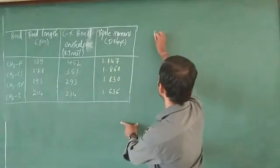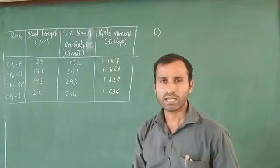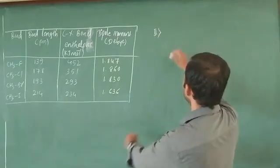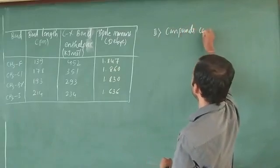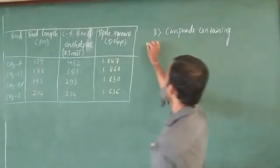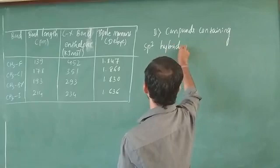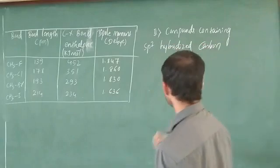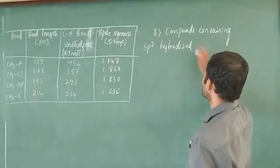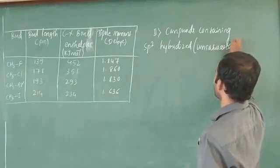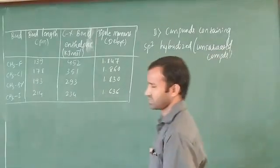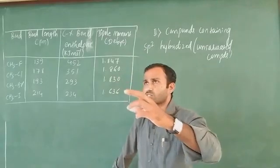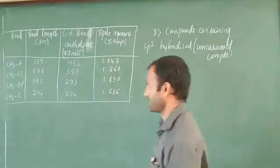The second category is unsaturated halogen compounds, where the halogen atom is directly attached to an sp2 hybridized carbon atom. sp2 hybridization indicates an unsaturated carbon atom.